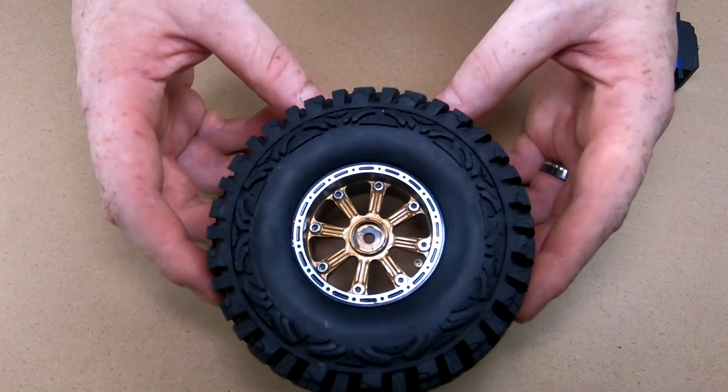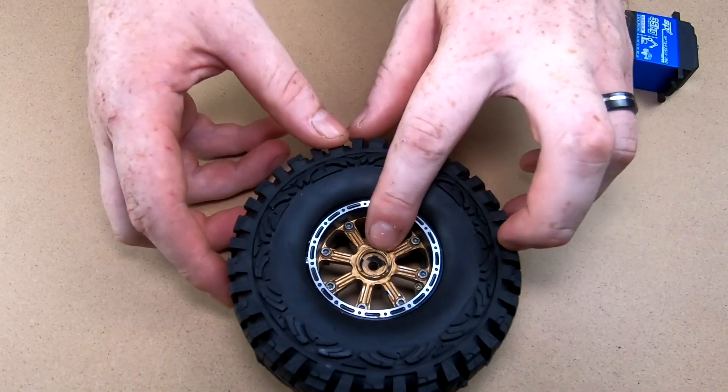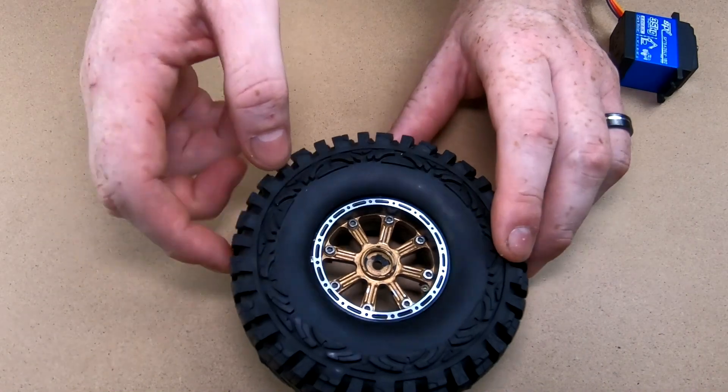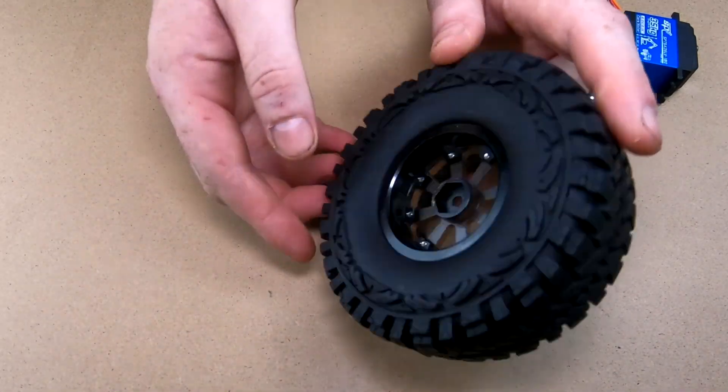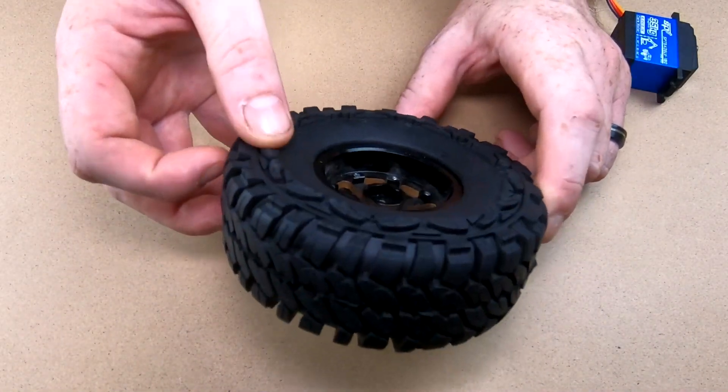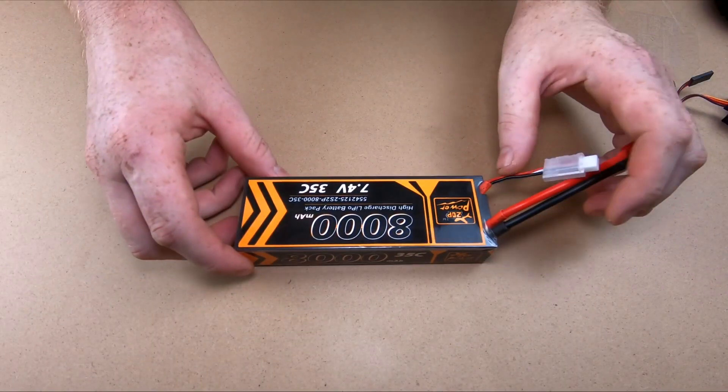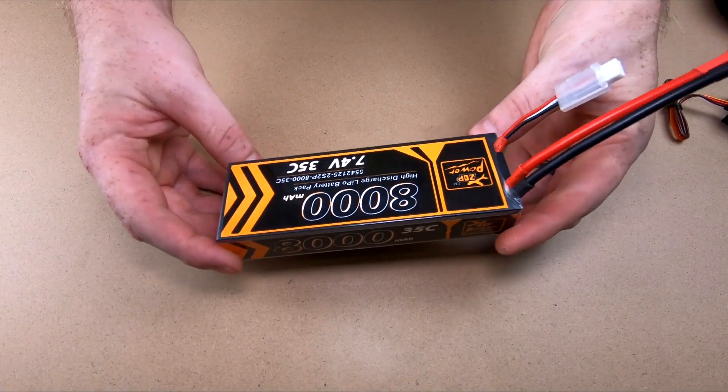We also picked up some tires. These aren't new beadlocks, we're borrowing these from a mate until we decide on what we want, but we're going to run these as well just to help give us a little bit more weight down low and see how much that improves the truck.